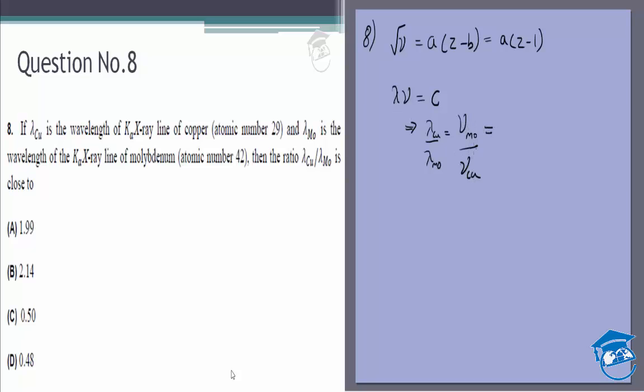Which is equal to mu Mo by mu Cu is approximately equal to A times what is Z of molybdenum? That is 42.